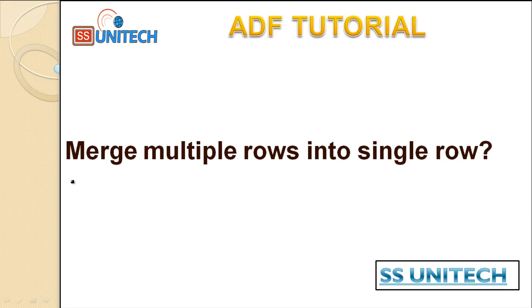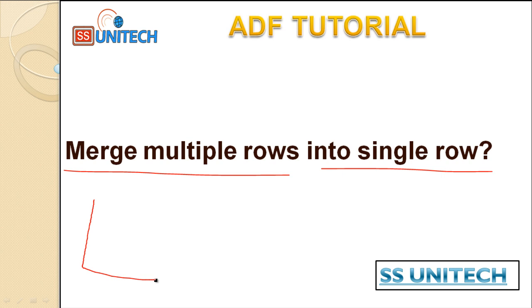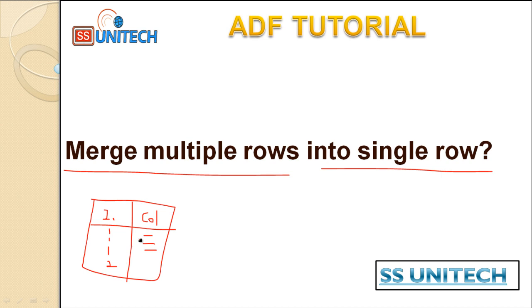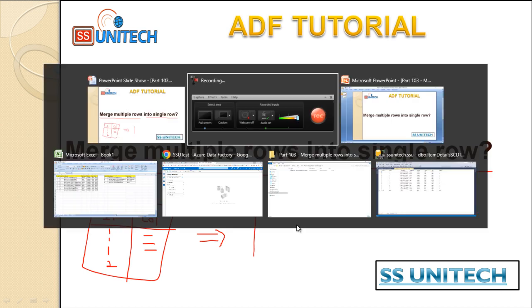Welcome to SSUnitech Social Design. Today we are going to see how we can merge multiple rows into a single row. This is one scenario that is also asked in interviews. Let's assume we have a dataset with a column called 'color' and an 'item ID' column. We don't want to keep this information as-is; we want to send a report to top management displaying items in a single row, with colors combined into a single row as comma-separated values. Let me go into Excel so it will be easier to understand.